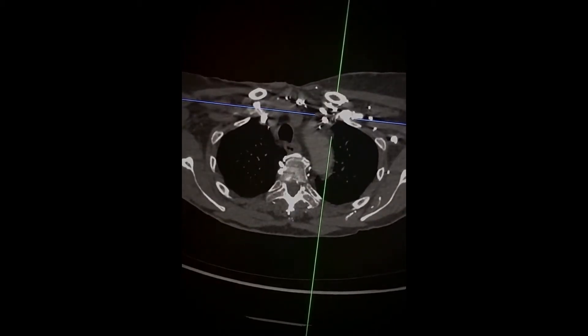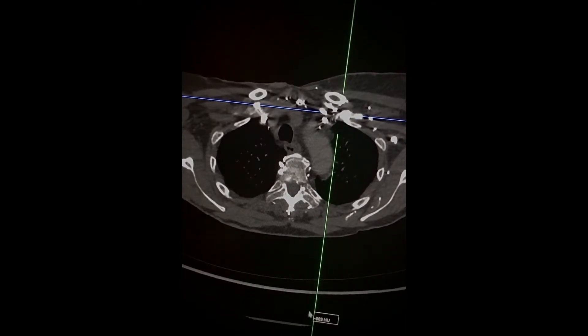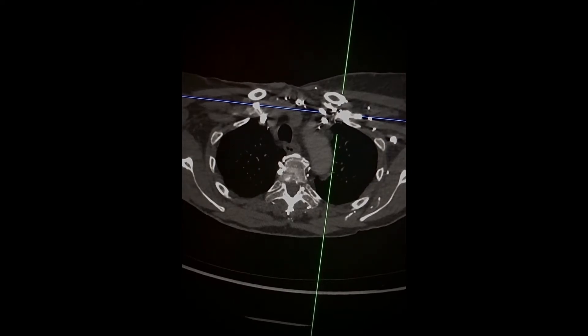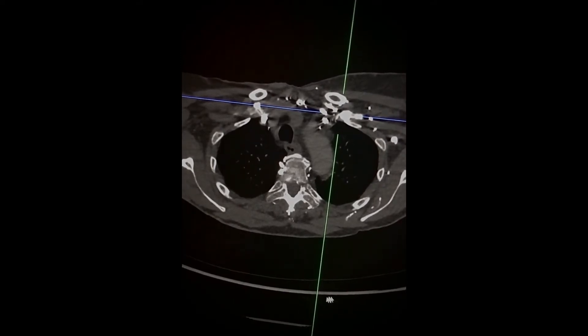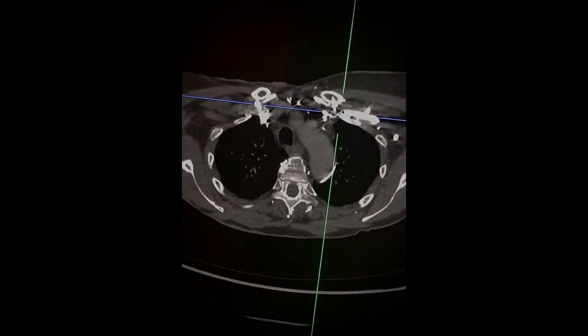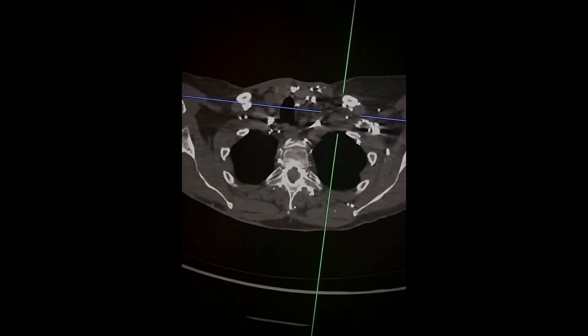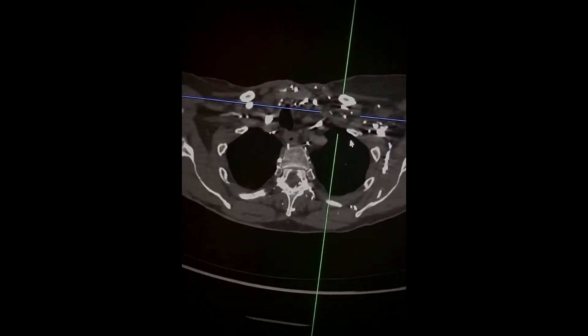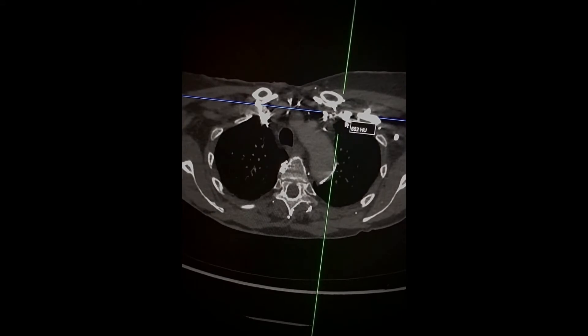The contrast comes to the point of the thoracic outlet but then diverts away. There are several structures which can hinder its passage here, the most common being a bony obstruction due to the course of the clavicle and the first rib.